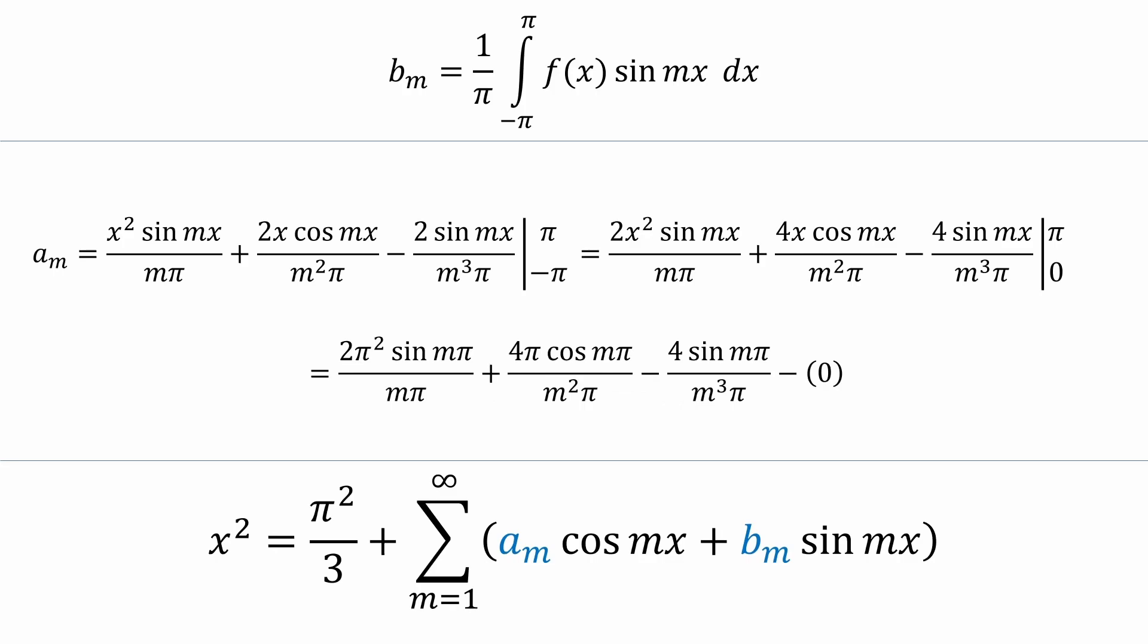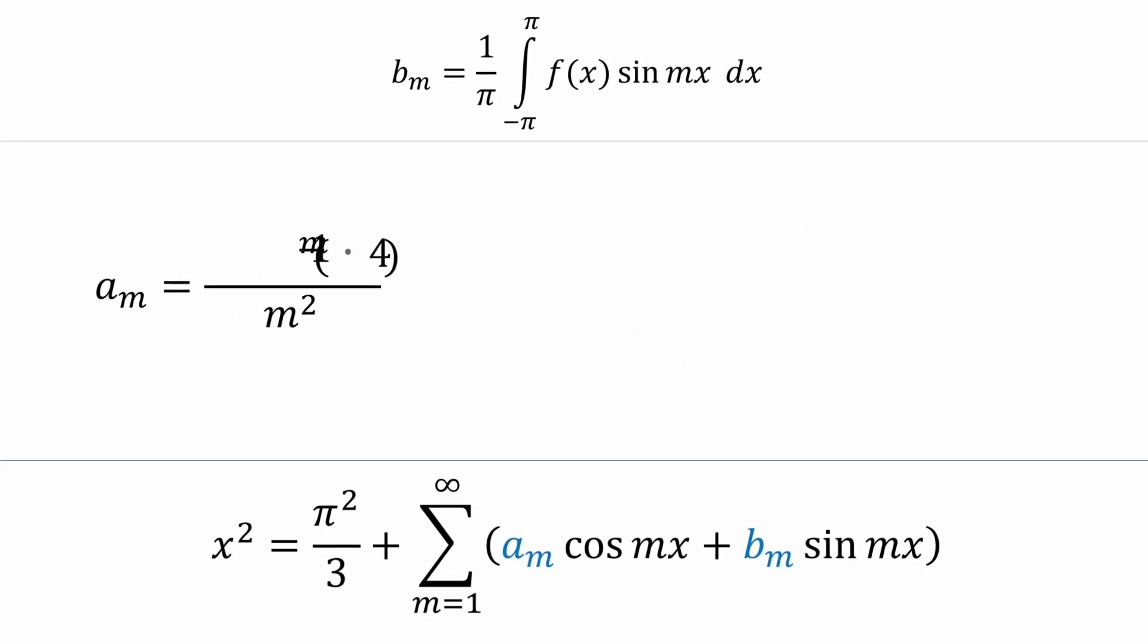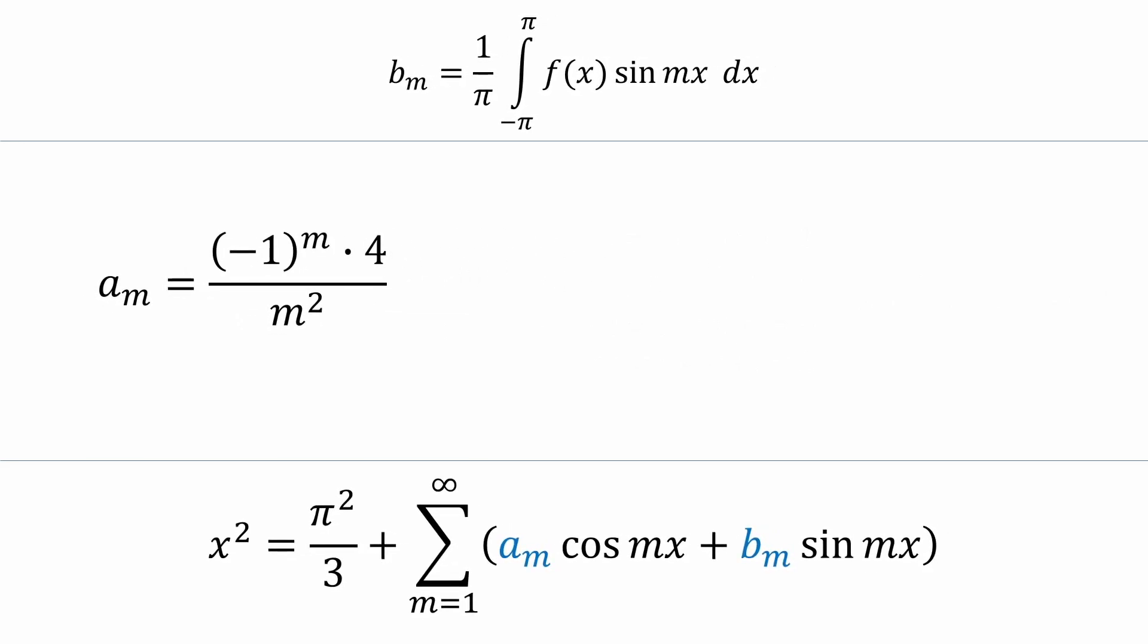And thankfully, the sine mπ terms are both equal to 0. So now we have this expression. And after canceling the π's, we're left with 4 cosine mπ over m². But we can simplify even further. Look at the pattern for cosine mπ. It's equal to negative 1 for odd m and positive 1 for even m. That means we don't even need cosine in our aₘ expression. Negative 1 to the m will do the trick.